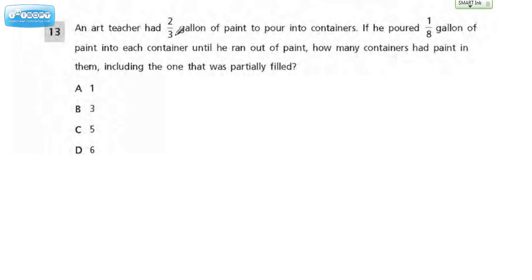an art teacher had two-thirds of a gallon of paint to pour into containers. If he poured one-eighth of a gallon of paint into each container until he ran out of paint, how many containers had paint in them, including the one that was partially filled?